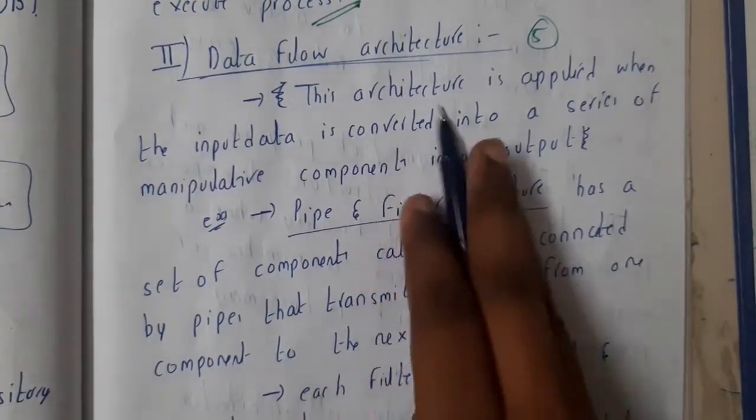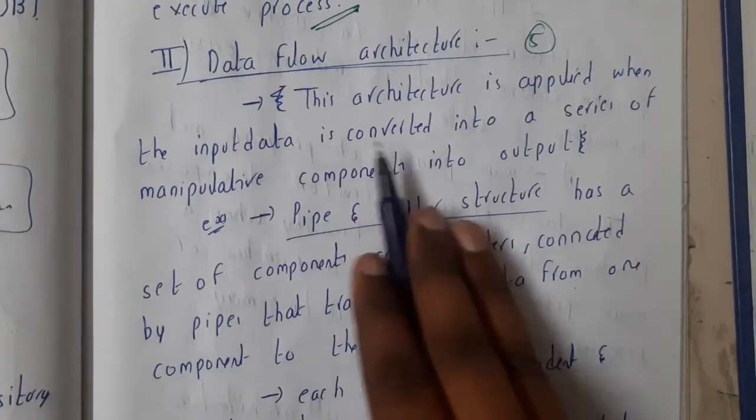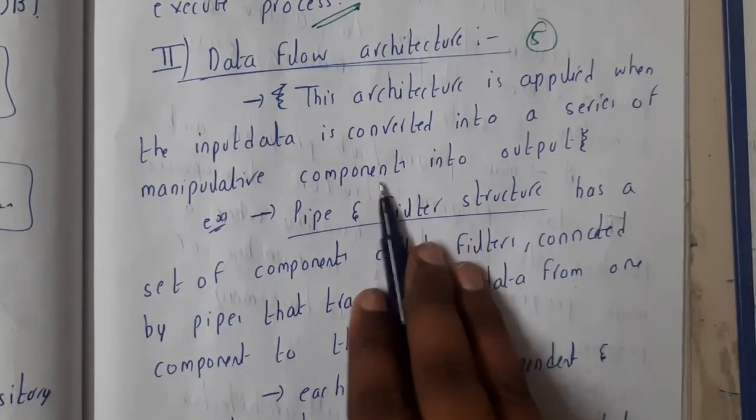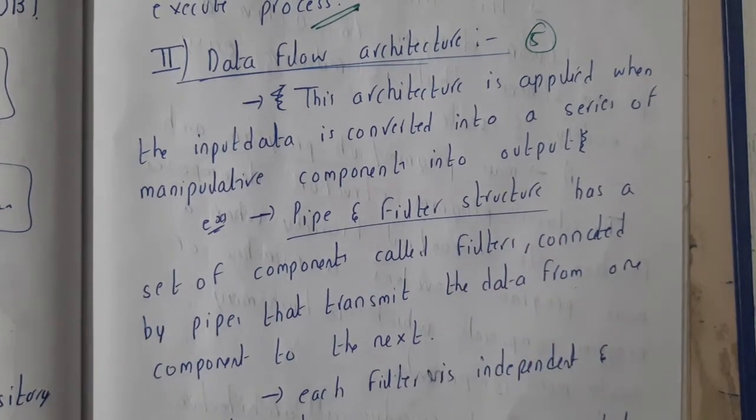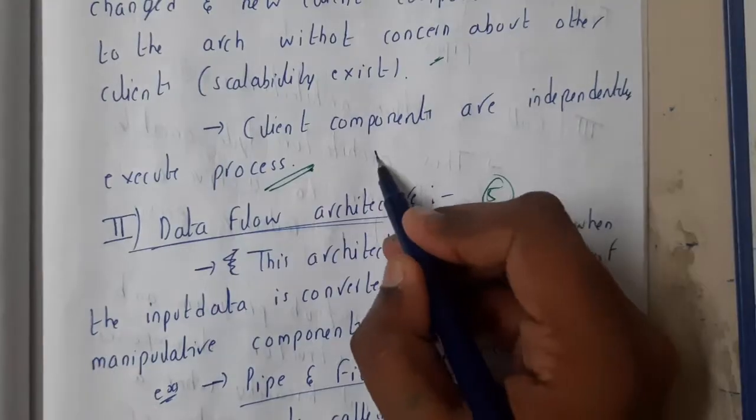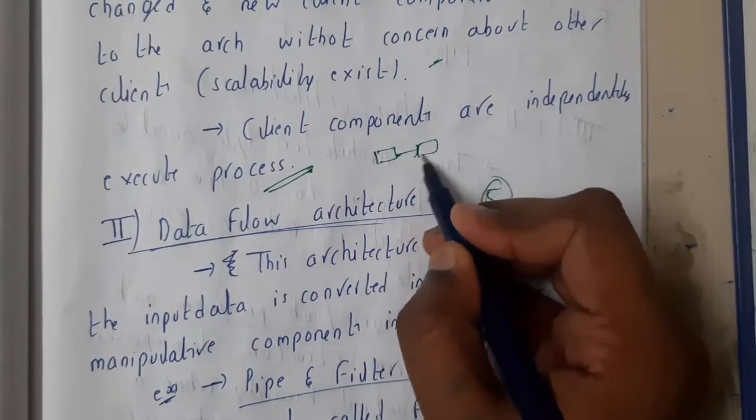So the architecture is applied when the input data is converted into a series of manipulations - that is nothing but computation components into output. So basically, you will be having an input, you will be passing it to something and it will be generating something.